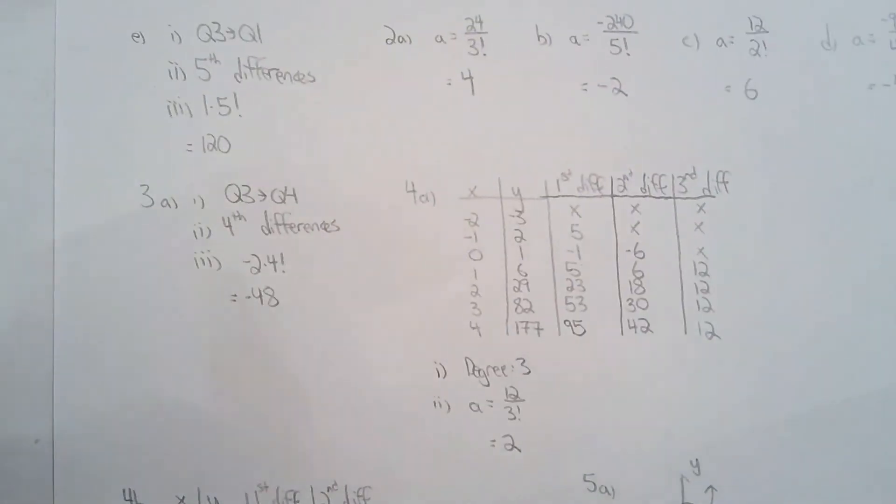For question 3, they asked me for the n behavior, which I can find using the leading coefficient and degree. I know that the fourth difference will be constant because it's degree 4. I can tell you the value of the fourth difference using the formula.